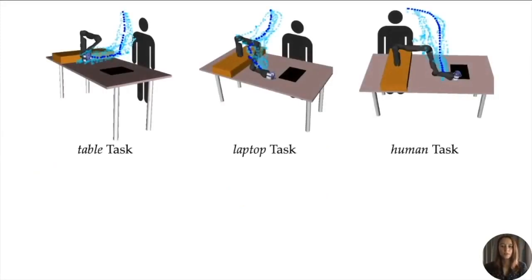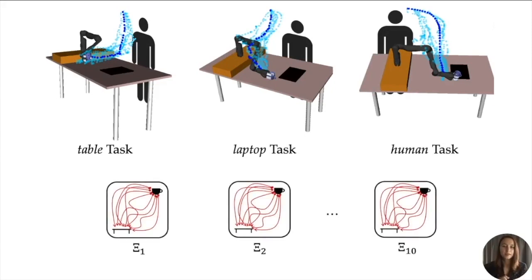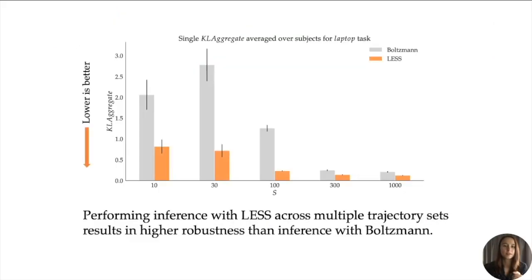To this end, we collected demonstrations from 12 users for three robot manipulation tasks: carrying the cup while keeping it close to the table, away from the laptop, and away from the human's body. To test our hypothesis, we sampled 10 different trajectory sets to emulate the continuous and infinite trajectory space. This plot showcases that performance inference with LESS across multiple trajectory sets in a real-world setting results indeed in higher robustness than inference with Boltzmann. Together, our results provide evidence that LESS is a better model for explaining people's choices, performing high-quality inference, as well as robustly inferring preferences in the real world.